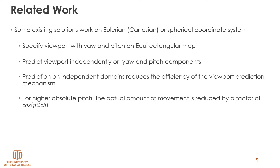In some existing methods, viewport is represented in spherical or Cartesian coordinate systems, and prediction is applied on each component independently. This may result in inaccuracies in prediction because, for example, on equirectangular projection, for higher pitch values, the actual viewport movement for the same difference on the yaw component is reduced by a factor of the cosine of pitch. So instead of predicting each component separately and measuring error on each individual component, they should be considered together.